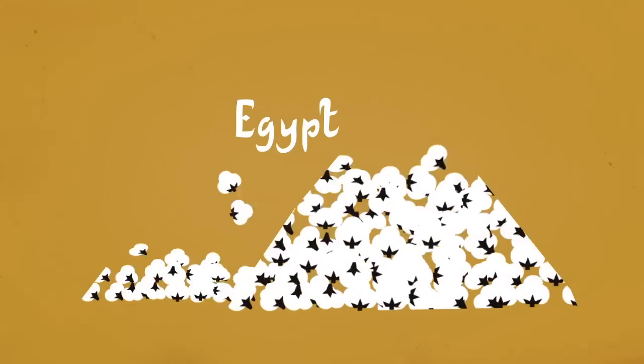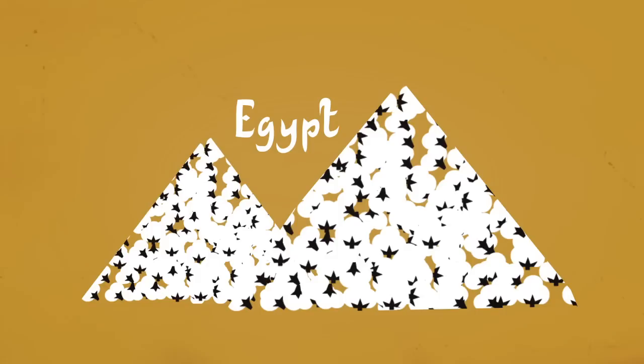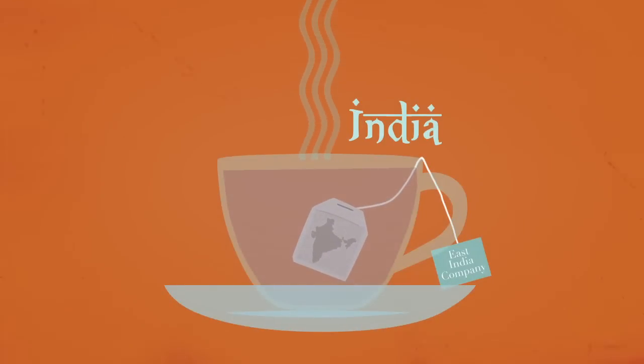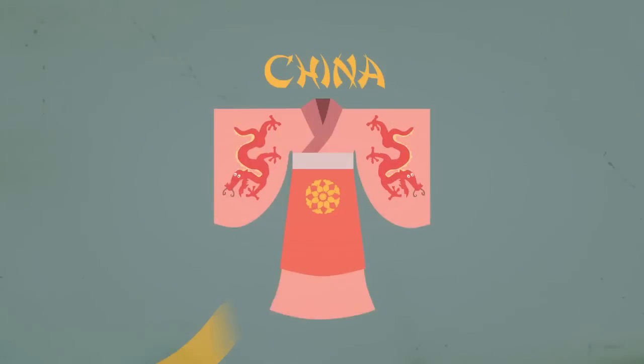The wealth of ancient Egypt came from trading food and cotton. That of India came from spices and tea. China's came from silk.